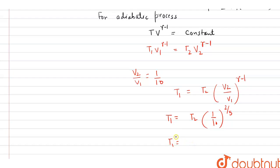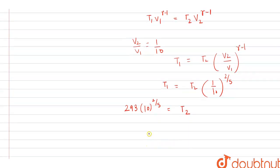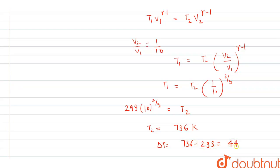The value of T1 is 293 K, so 293 = T2 · (1/10)^(2/5), which means T2 = 293 × 10^(2/5). On solving, T2 comes out to be approximately 736 Kelvin. Therefore, the change in temperature ΔT = 736 − 293 = 443 Kelvin.